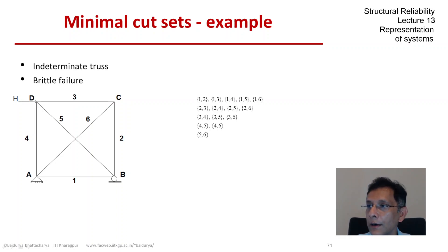And so here they are. We select two out of six. So there are 15 such combinations. Each of these is a minimal cut set for this truss structure.